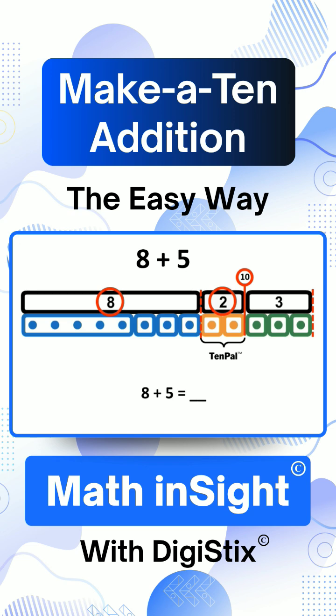To find the total, we start by making a 10. We add 8 and its 10-pal, which is 2. 8 plus 2 is 10, which we show like this.